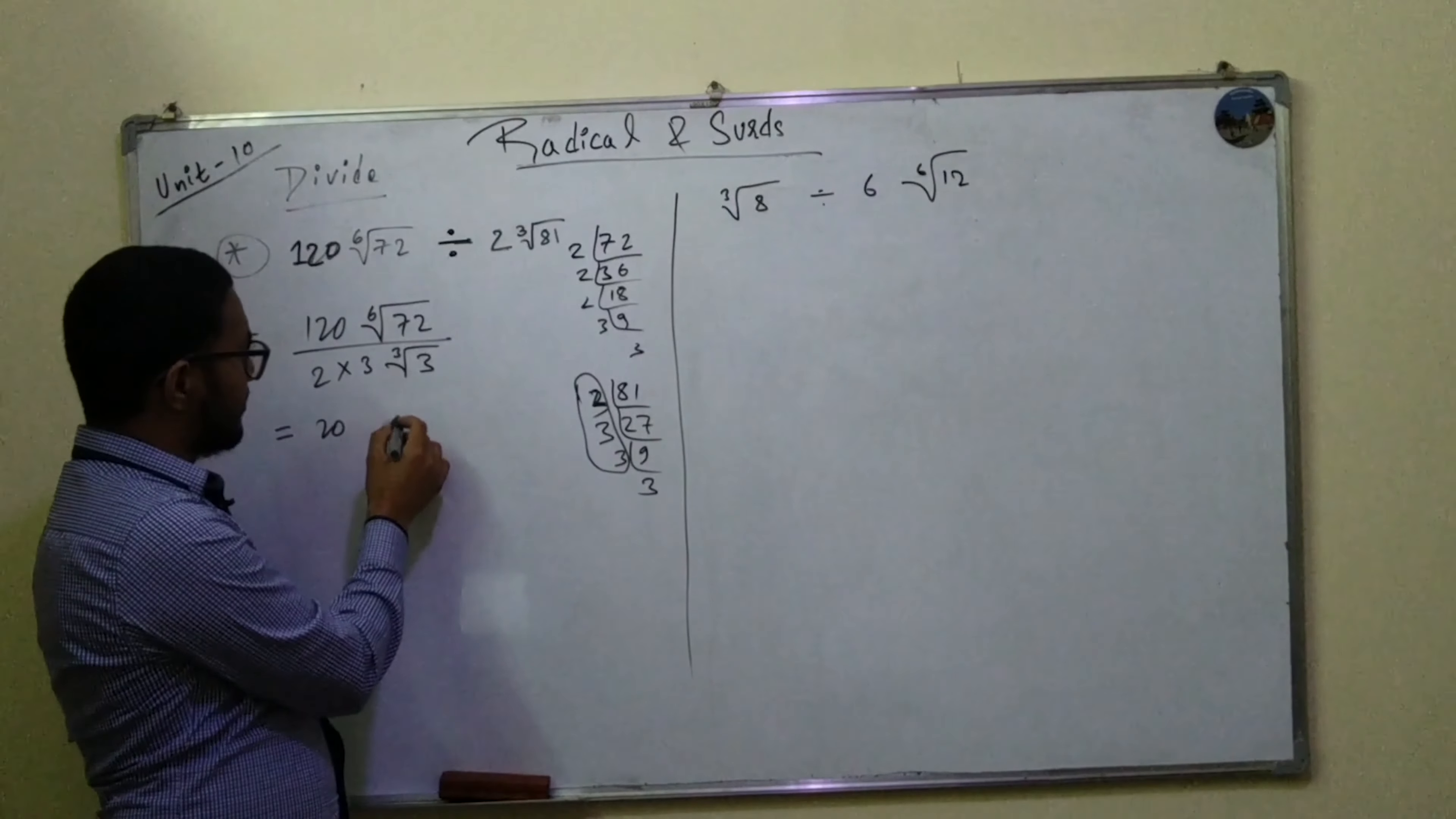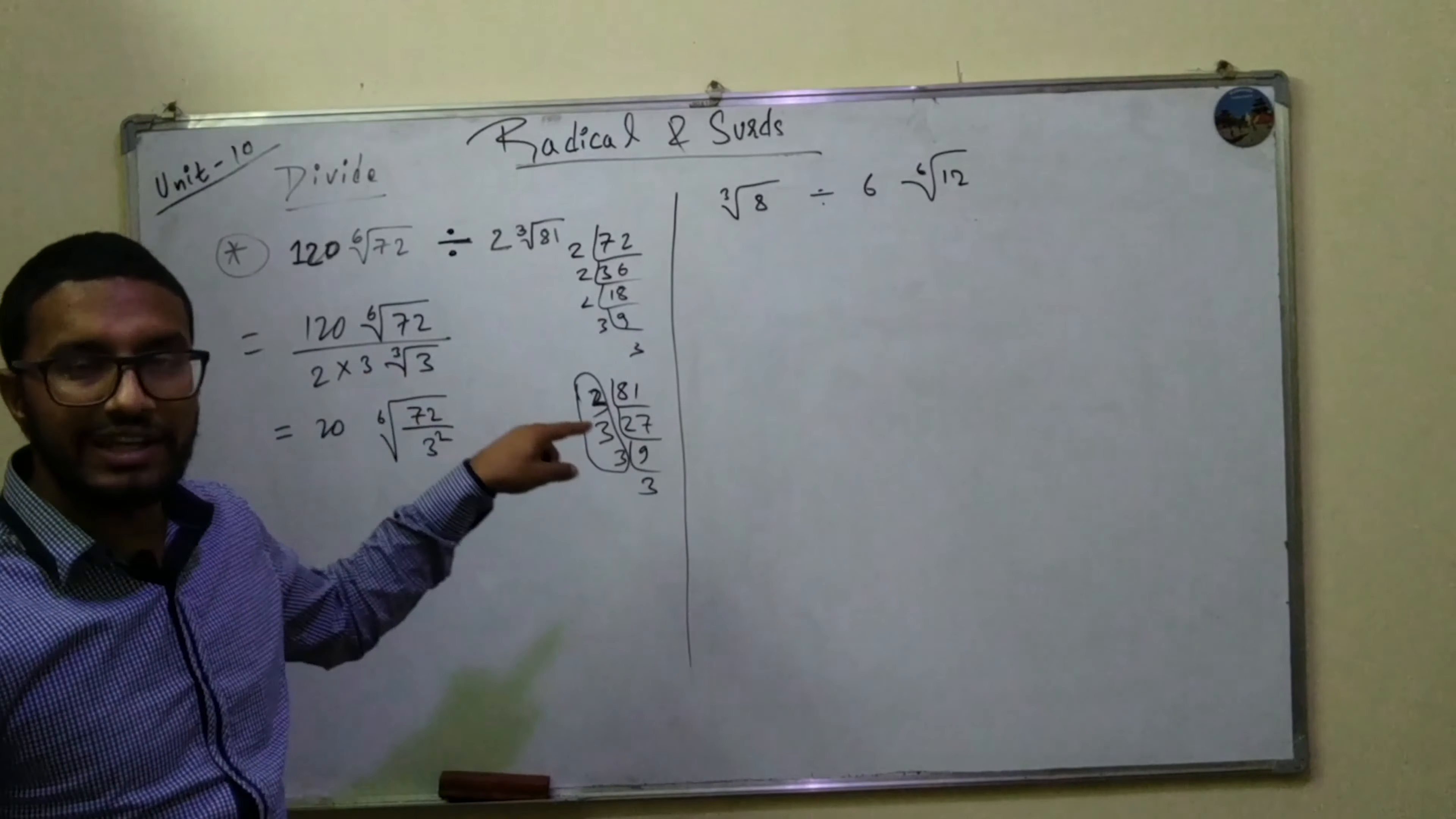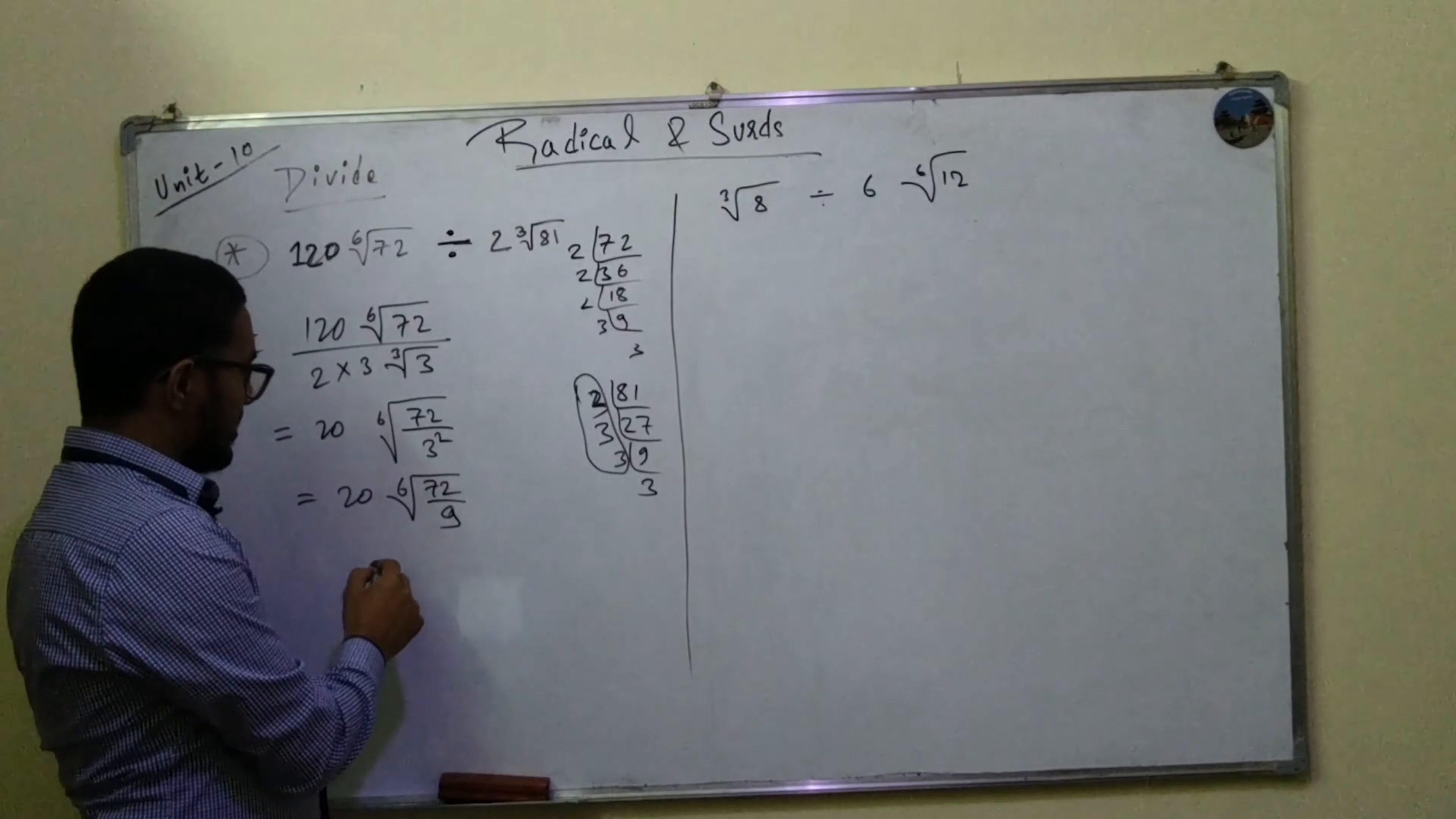And then after that, so what I can possibly do is this will be our under 6 and then this will be our 3 square. Okay, so since the order of 3 was three, right, so we have to multiply by two. That means this will be 9 times, right? So 120 under 6 and then after that under 3 by 9, right.